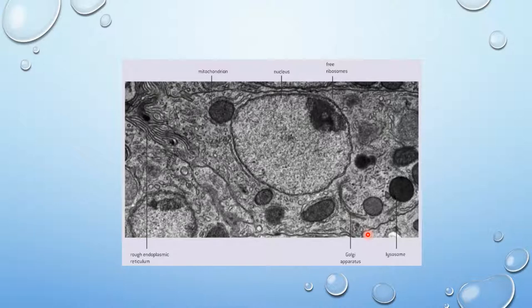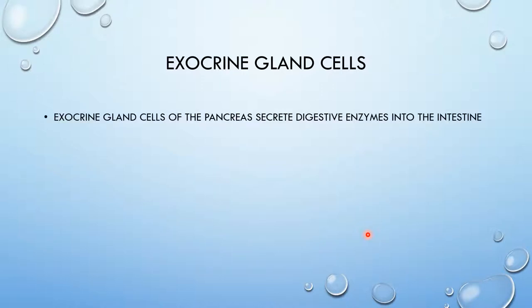What I advise you guys to do is look up a lot of electron micrographs online and try to identify where each organelle is or what each organelle is because you guys will probably need to label organelles on your test or something. So we're going to go over two more cells. The exocrine gland cells and I believe a leaf cell.